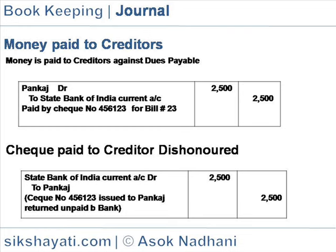Cheque paid to creditor dishonored. If the cheque paid is dishonored, the entry would be the reverse of the earlier entry. For example: State Bank of India debit 2500 to Pankaj — cheque number such-and-such issued to Pankaj, returned unpaid by bank.